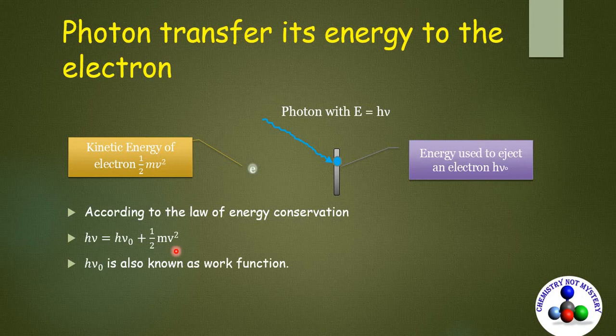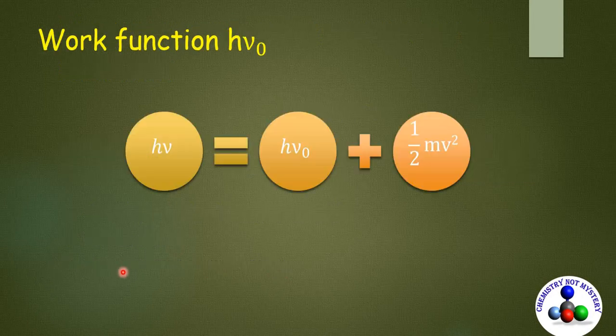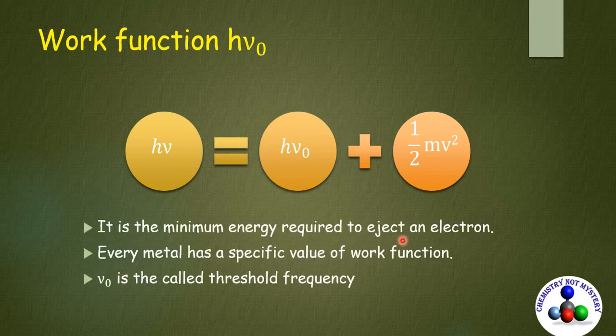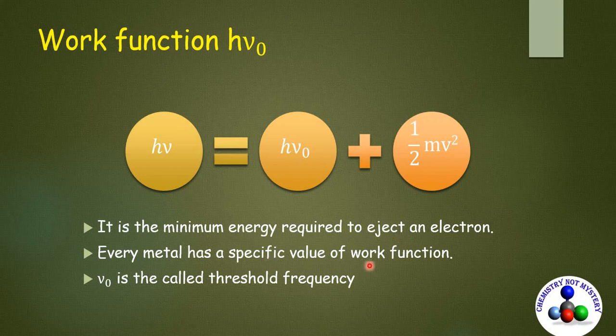Let's try to understand work function, hν₀. It is the minimum energy required to eject an electron. Every metal has a specific value of work function.